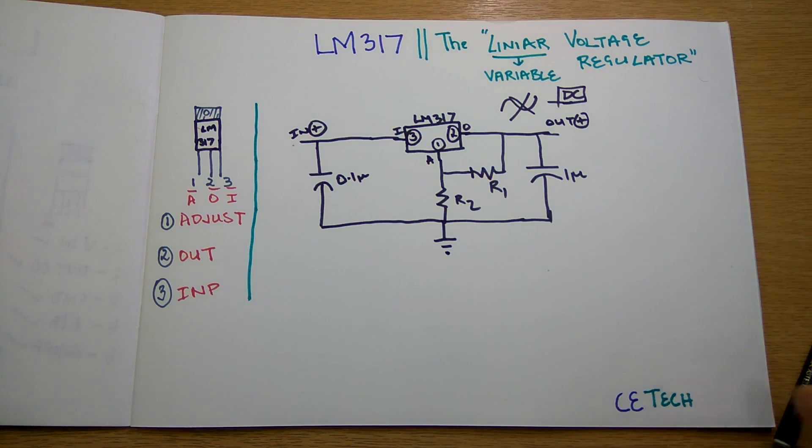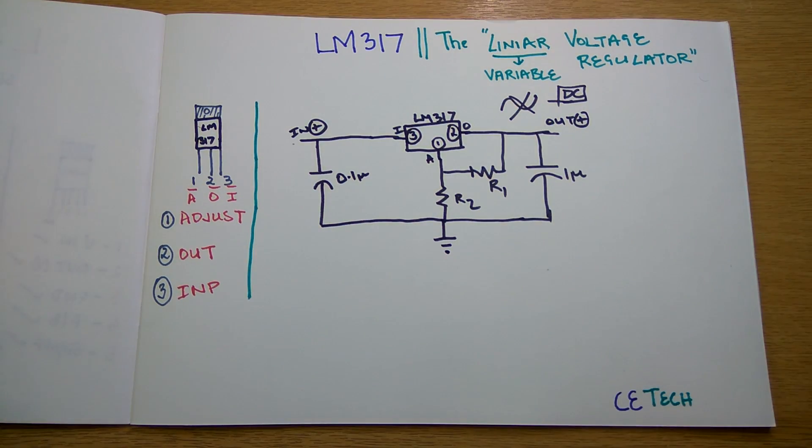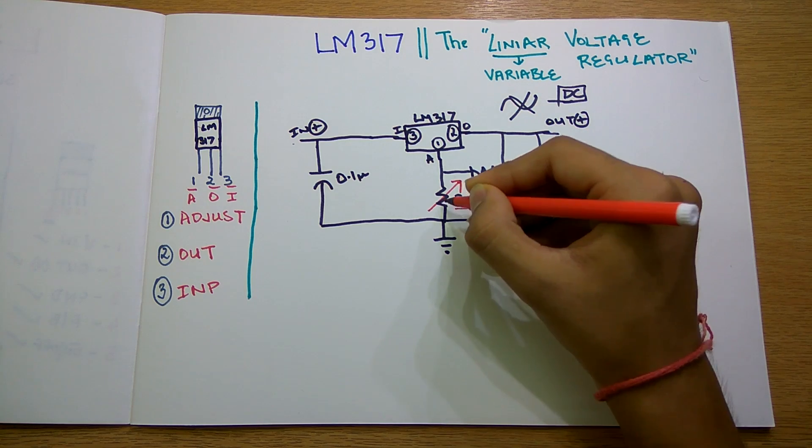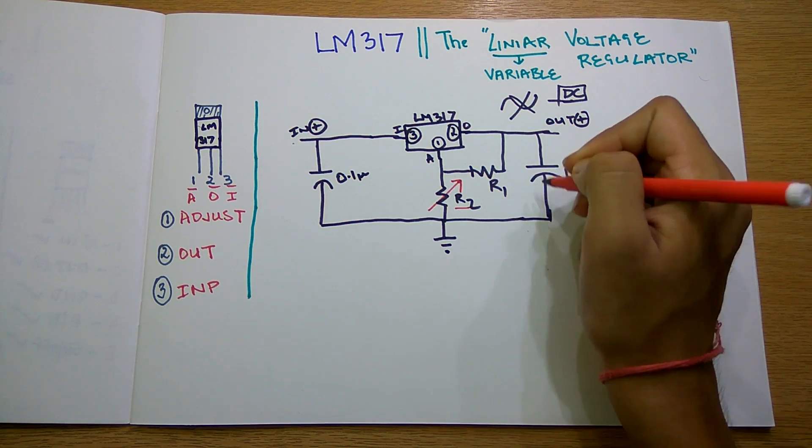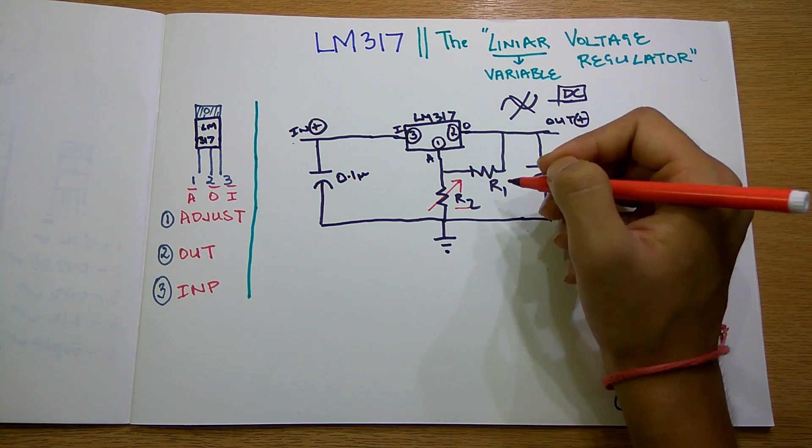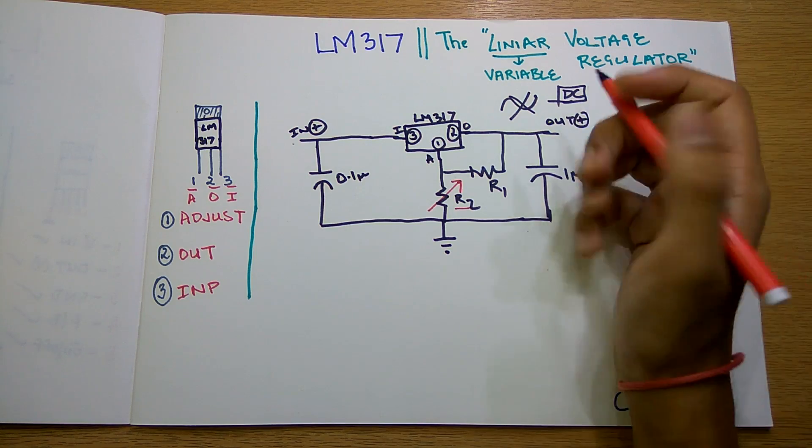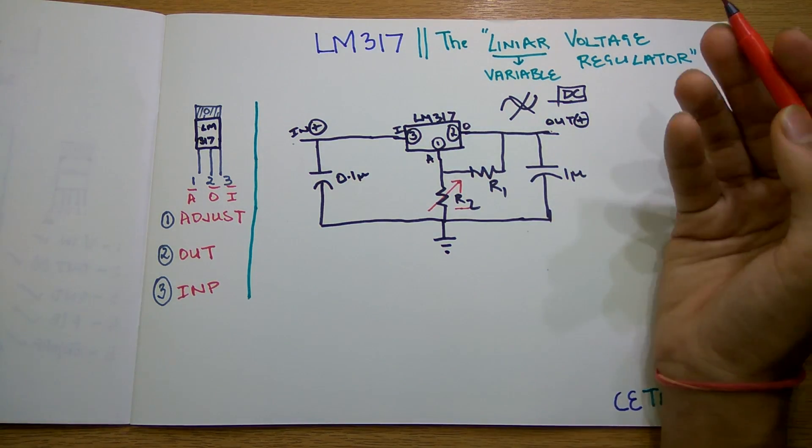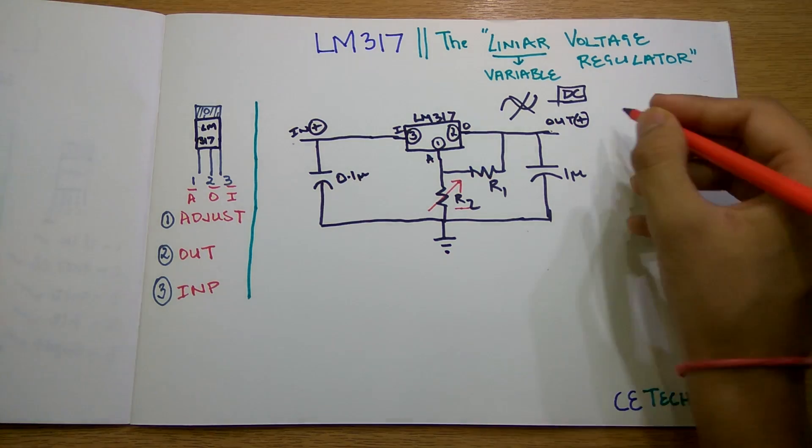For the variable application we can place a variable resistor R2. When we vary this, the output voltage varies. Now you may think: if we want to make a fixed power supply using this, how do we calculate the values of R1 and R2?